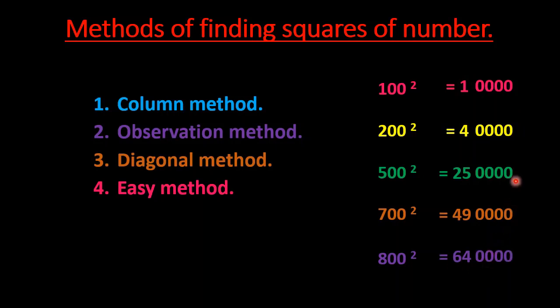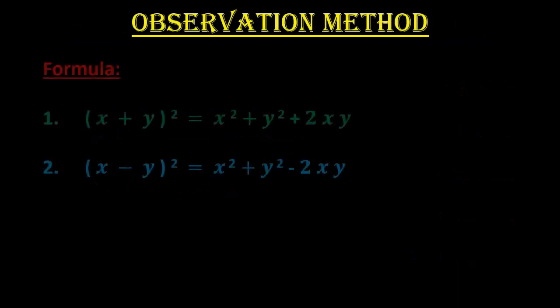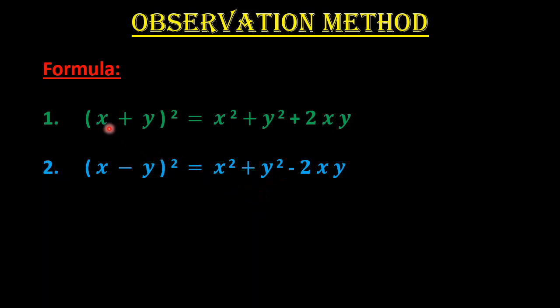Now let us understand the observation method by solving problems. The first thing we need to know is the two formulas used. Formula one uses a plus sign: (x + y)² = x² + y² + 2xy.